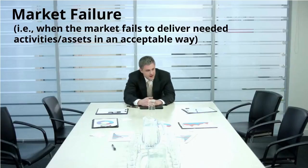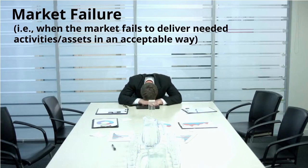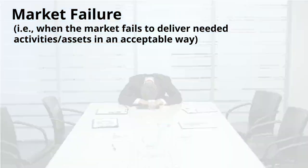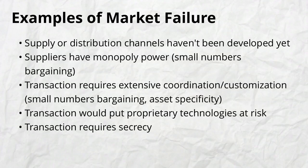Transaction costs are part of the reason that the market can fail. Market failure is when the market fails to deliver needed activities or assets in an acceptable way. Examples include situations such as when supply or distribution channels haven't been developed yet; when suppliers have monopoly power, which is also an example of small numbers bargaining; when the transaction requires extensive coordination or customization, an example of small numbers bargaining and asset specificity; or when the transaction would put proprietary technologies at risk or requires secrecy.